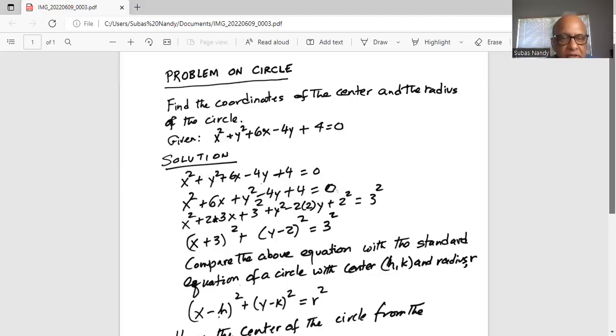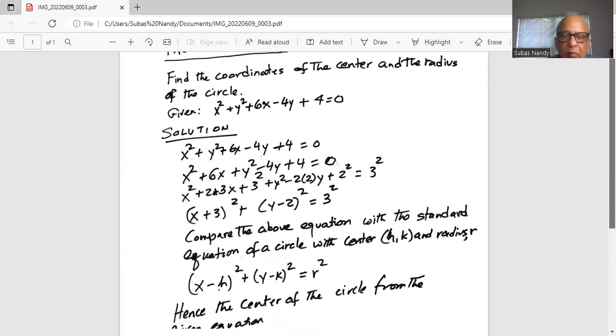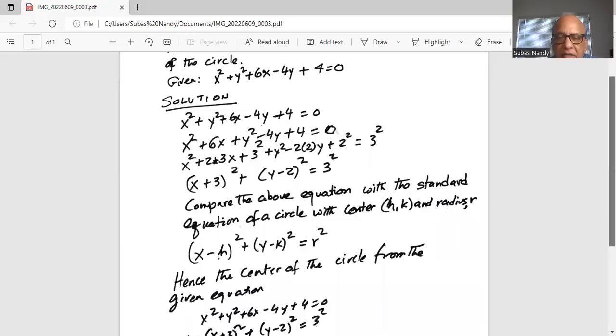So finally we can express it as x plus 3 in parentheses square plus y minus 2 in parentheses square and we have 3 squared on the right hand side of the equal to sign. Compare the above equation with the standard equation of a circle with center h, k and radius r. That standard equation is x minus h in parentheses square plus y minus k in parentheses square equal to r squared.